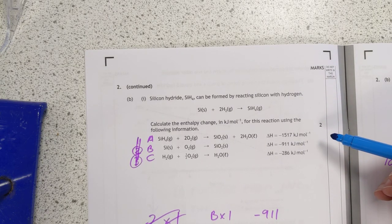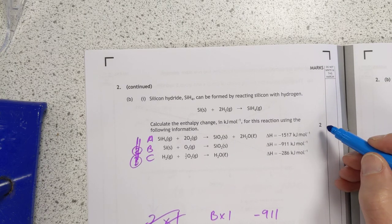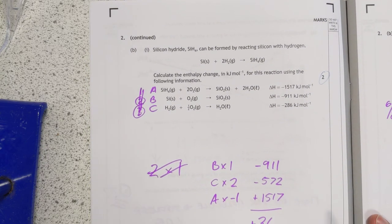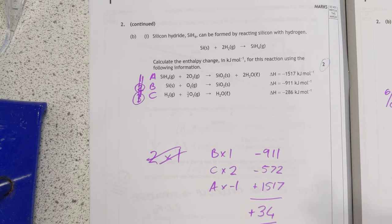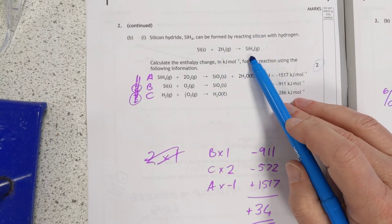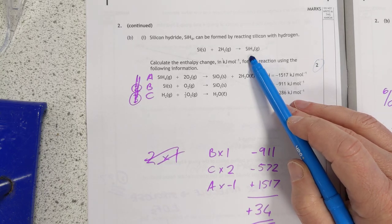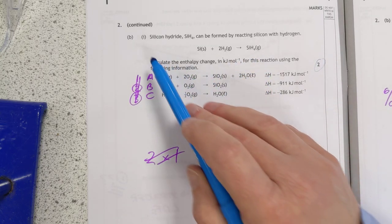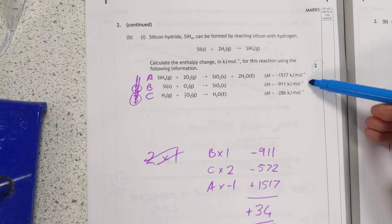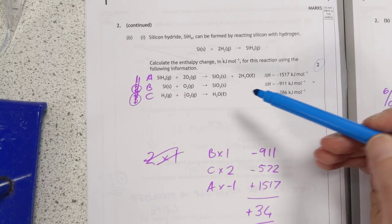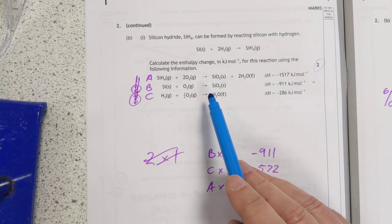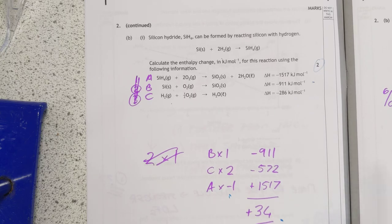This is a Hess's Law question. It's quite a gift actually for two marks, because it's super simple. If I keep my target on screen, there's your target equation there. We need a silicon, two hydrogens, and a silicon hydride. So we need equation B times 1, that gives you your silicon. Equation C times 2, that gives you your two hydrogens. And then we need to flip equation A, so that's times negative 1. That is my sum.